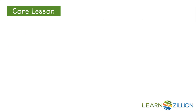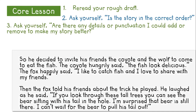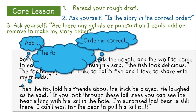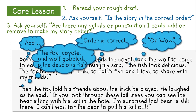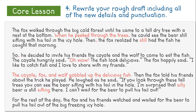Now that I've completed these steps for the beginning of my story, I would go back and complete steps 1 through 3 for the middle and the ending. Here is the middle and the ending. When I ask myself, is it in the correct order? I think yes, the order is correct and makes sense. After I reread it, I notice there are more details and punctuation that I can add to help the reader picture what is happening and make my story sound even better. Here are some of the words and punctuation that I'm going to add into my rough draft. Now we are ready to complete step 4, which is to rewrite your rough draft, including all of the new details and punctuation. I rewrote my rough draft here. The new details and punctuation that I added are in red.